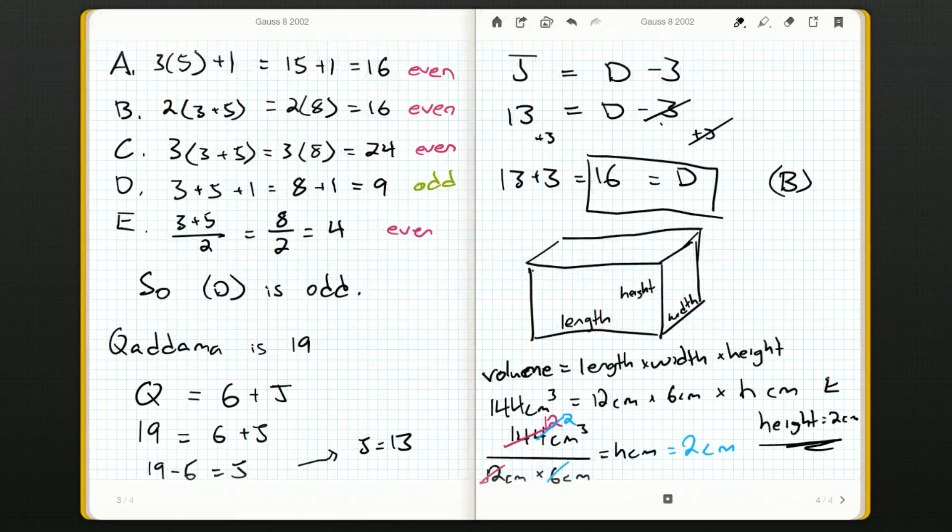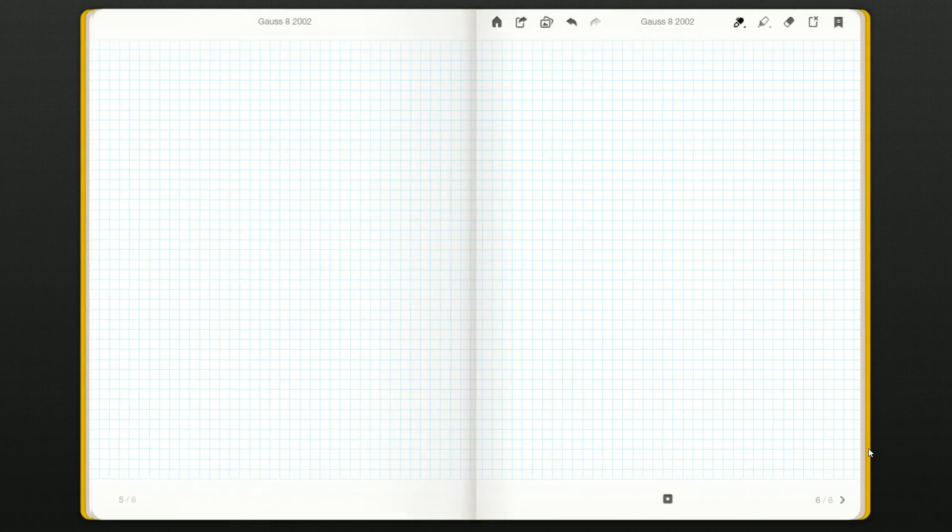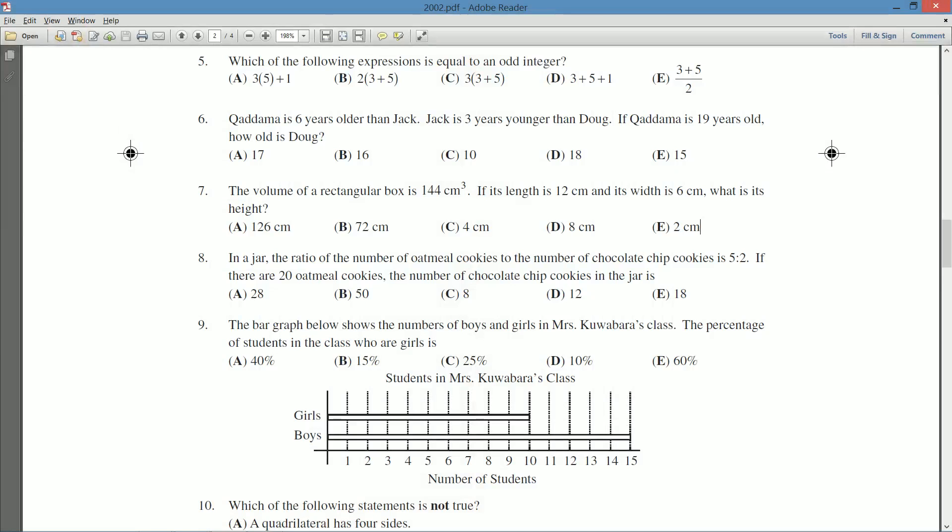So we're going to say our answer is E and we're going to flip the page in anticipation of our next question. That will be question number eight on the grade eight Gauss paper. I'll see you guys then.